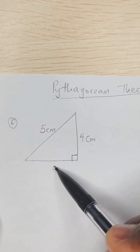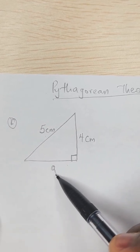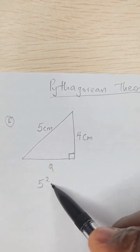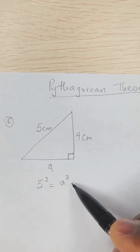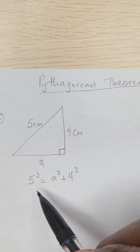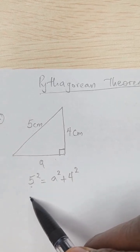We need to solve for a. Using the formula, we know that 5 squared is equal to a squared plus 4 squared. Now, 5 squared is 25.